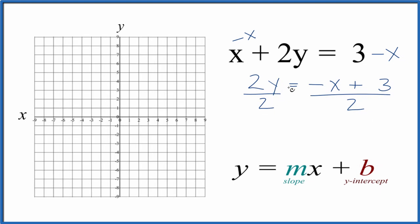2 divided by 2 is 1, so 1y, that's just y. And then we have negative x over 2 plus we have 3 over 2. So now we have it in slope-intercept form.